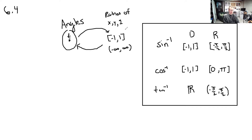Okay, but now we're not talking about circles — now we're talking about triangles. So what do these ratios become from this new perspective? They're no longer necessarily x and y-coordinates. Now these things are side lengths.